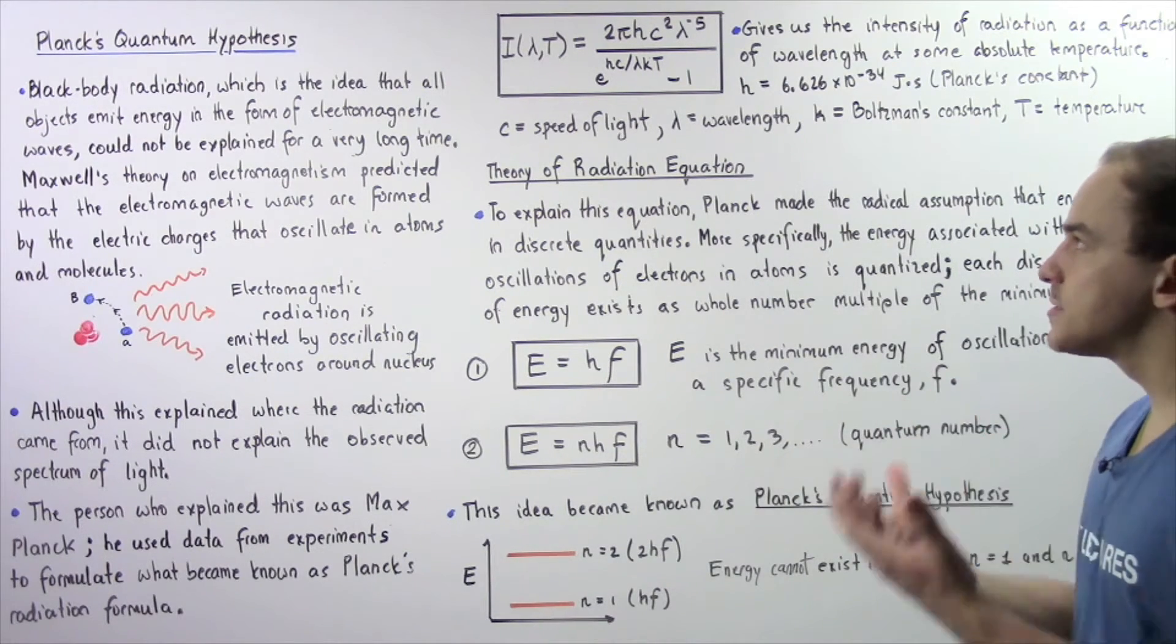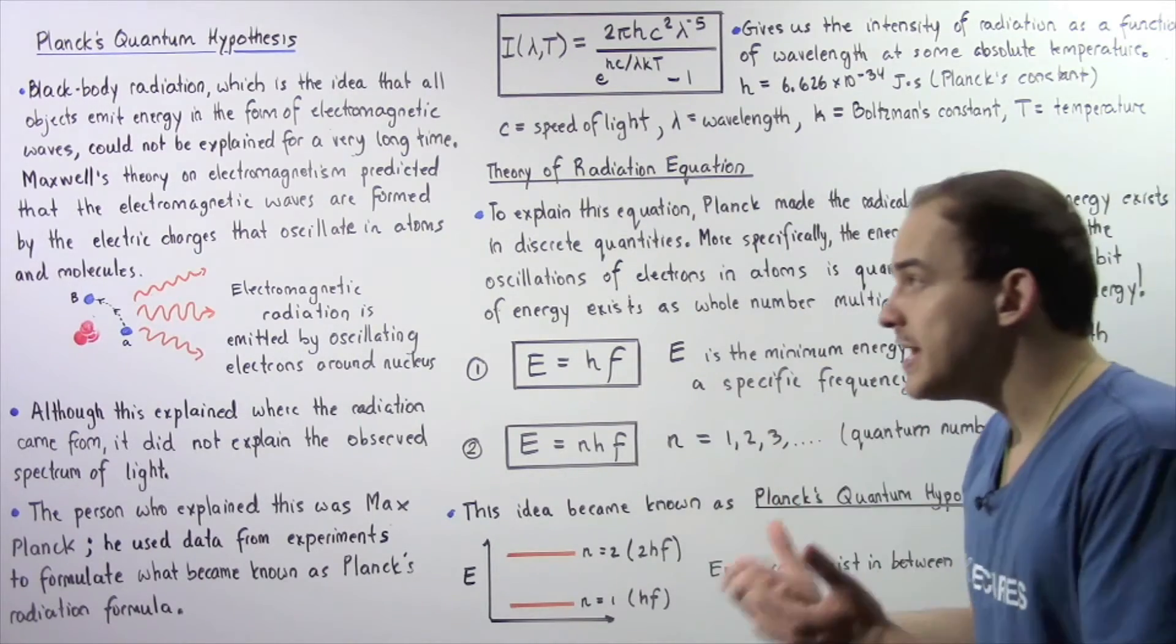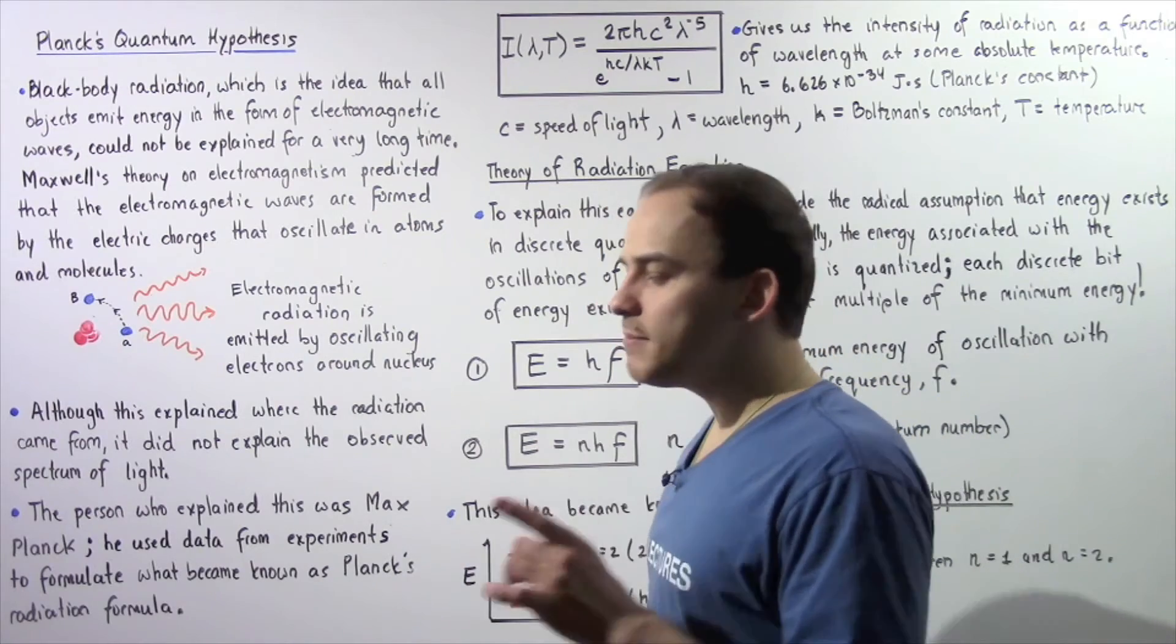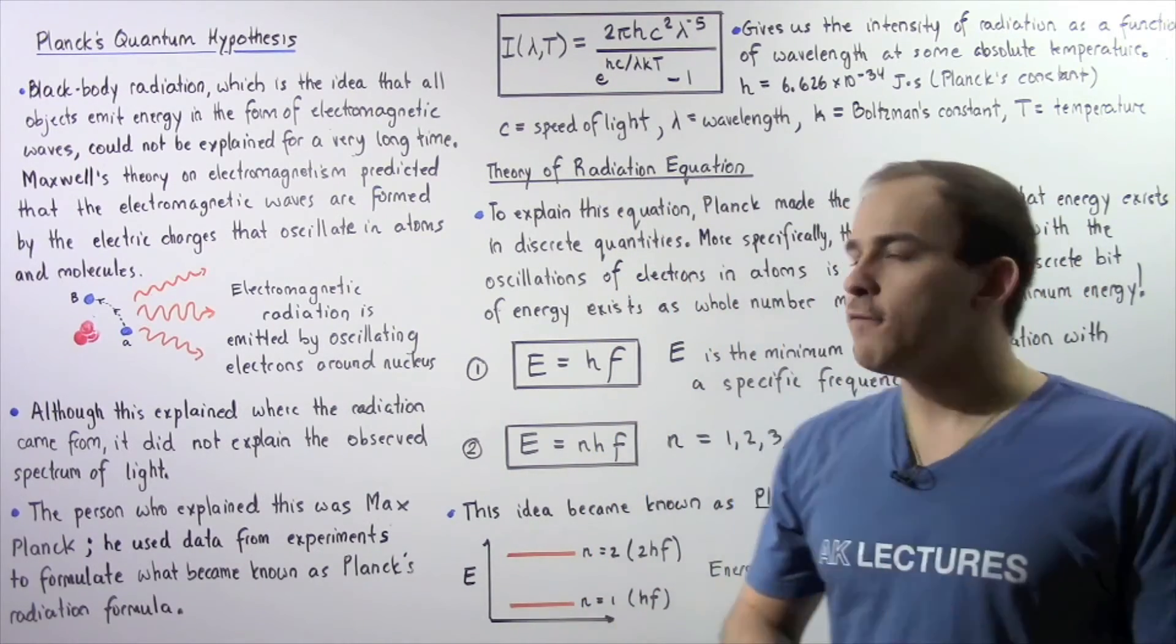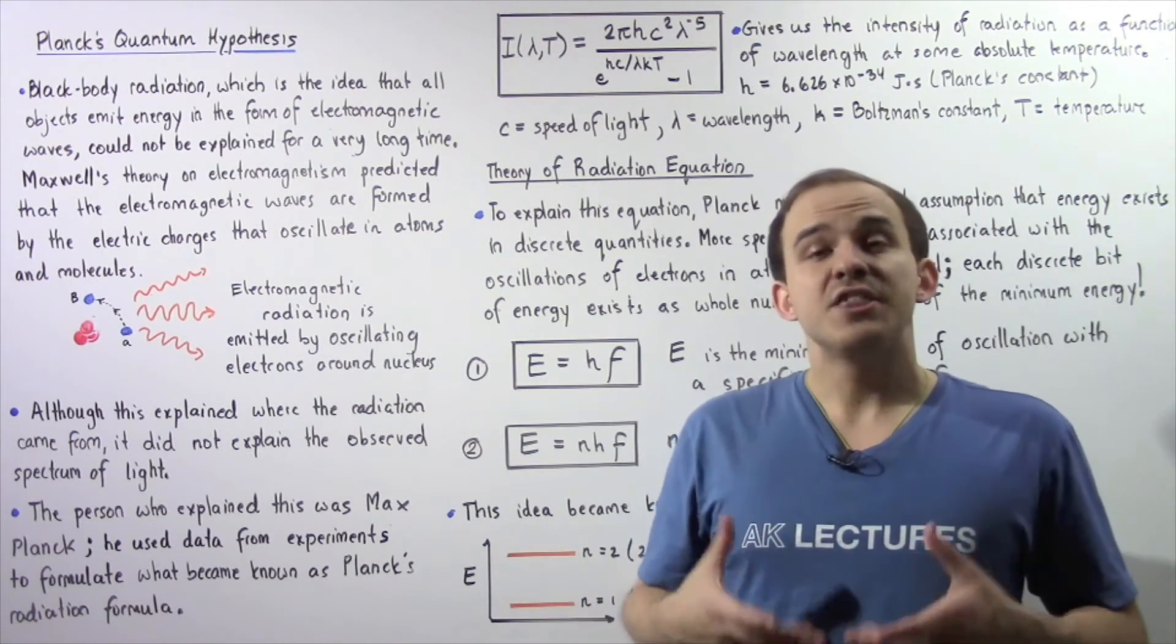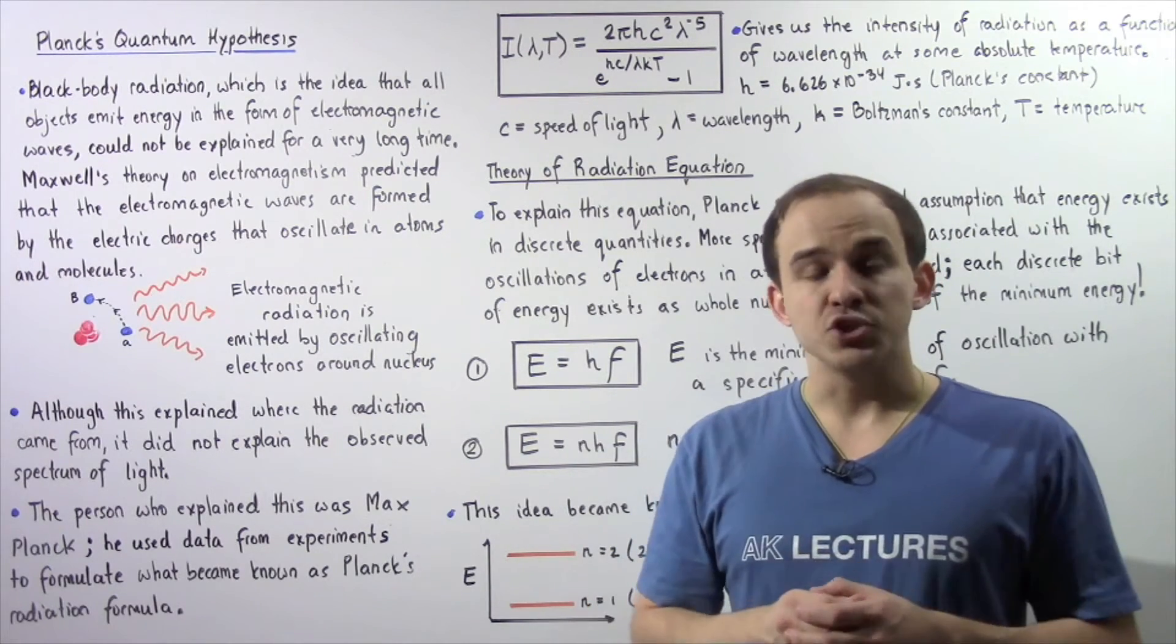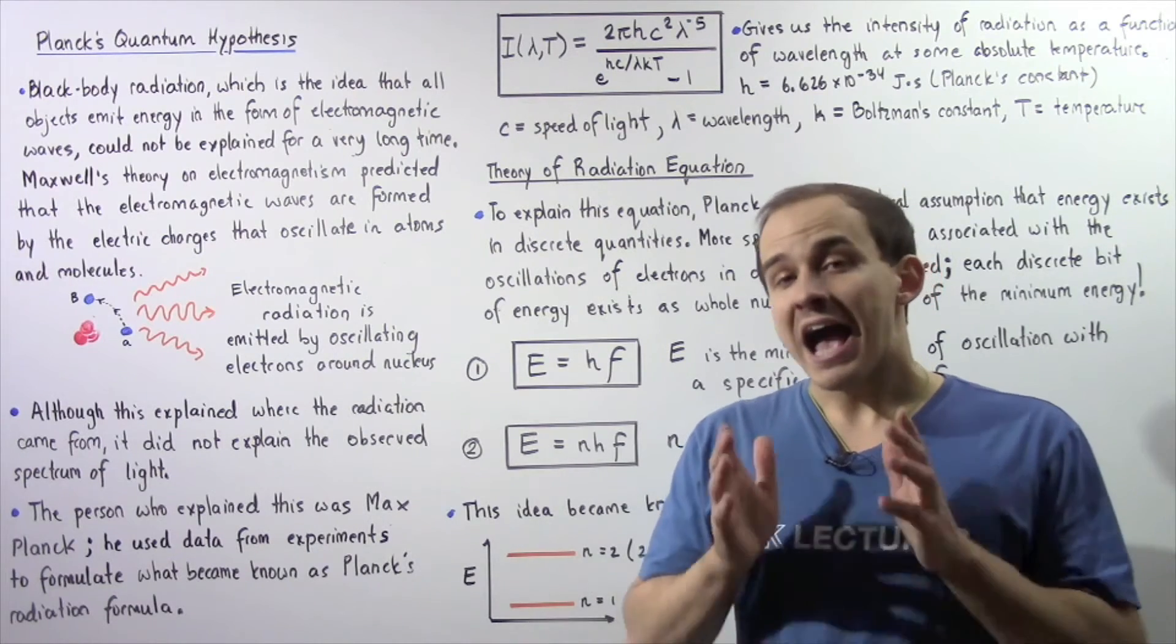Now to actually explain the meaning behind this equation, to explain the theory of this equation, Max Planck had to make a very important assumption about energy. Now before this equation was introduced, it was believed that energy existed on a continuous spectrum of numbers. So energy can be any number whatsoever.